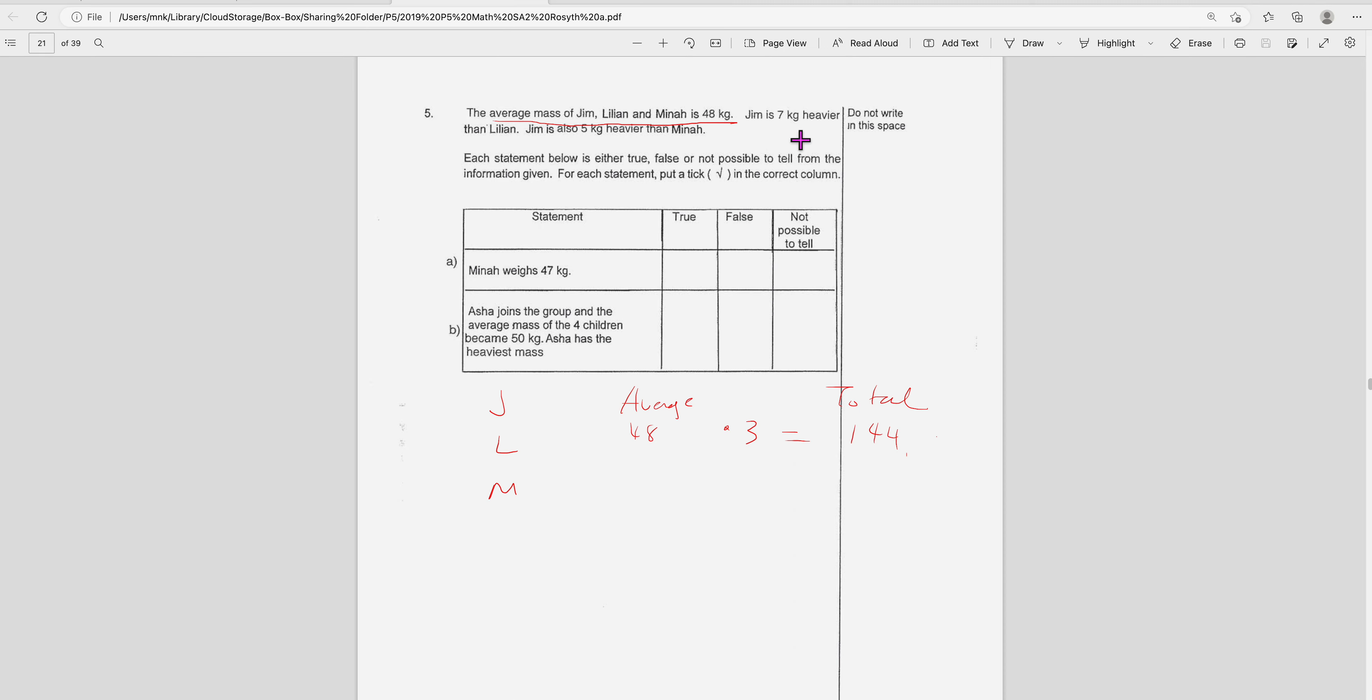Now they say Jim is 7 kg heavier than Lily, and Jim is also 5 kg heavier than Mina. So basically Jim is the subject. So Lillian plus 7 is J, and Mina plus 5 is J. Therefore, L is actually J minus 7, and M is J minus 5.